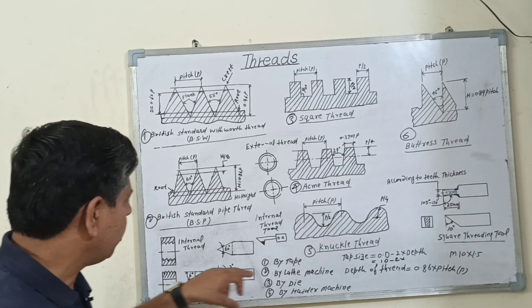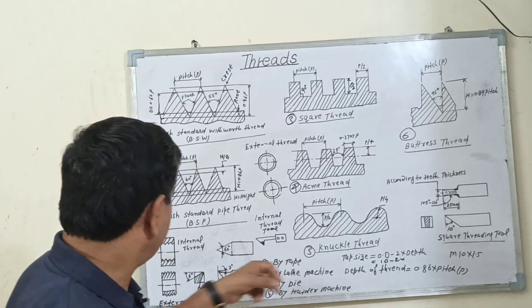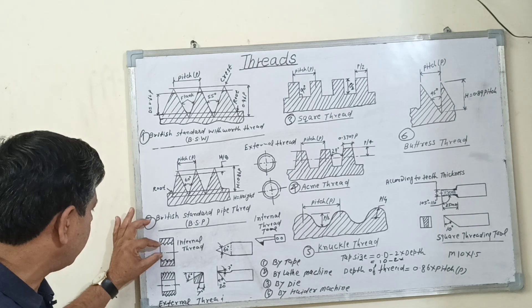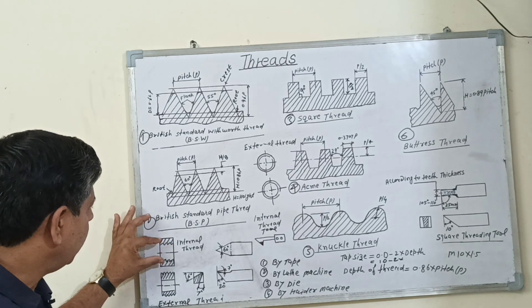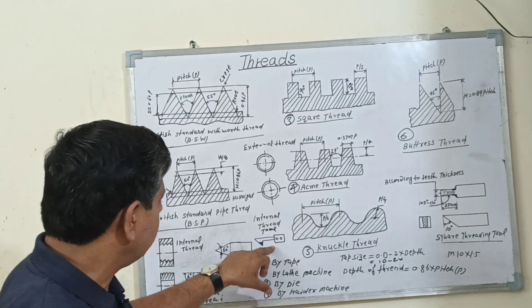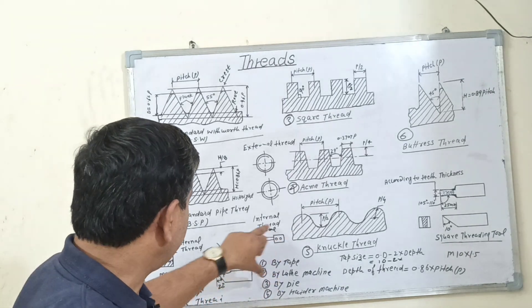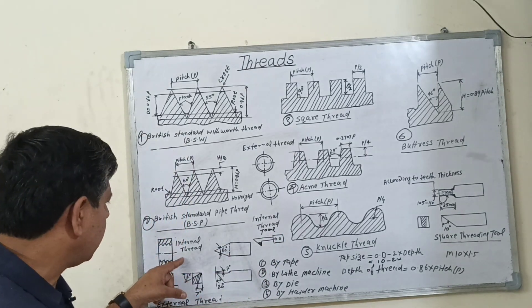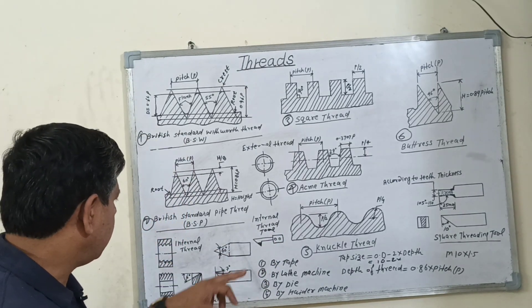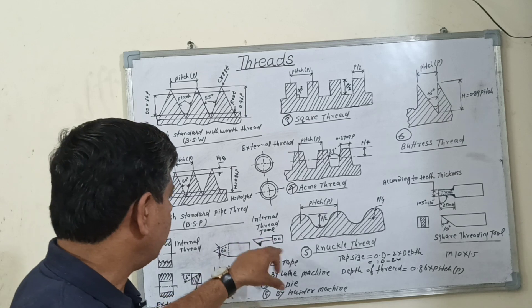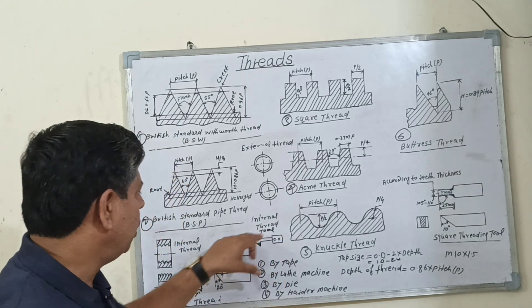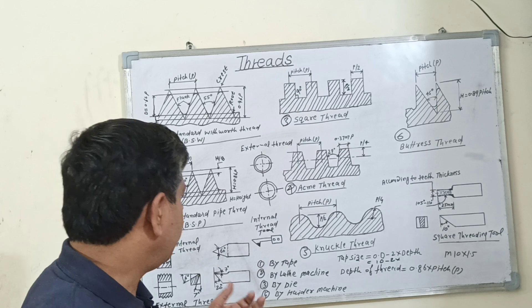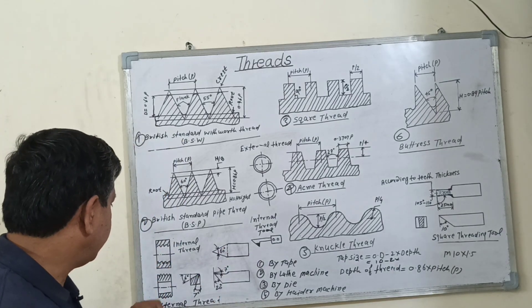The internal thread is cut by a tap up to 1 inch diameter. If the diameter is more than 1 inch, then you will use the lathe machine with this type of internal boring tool to cut the internal thread. This type of tool is mounted on the tool post of the lathe machine to cut the internal thread.